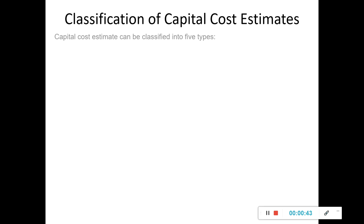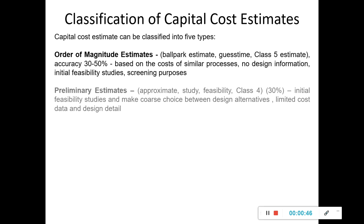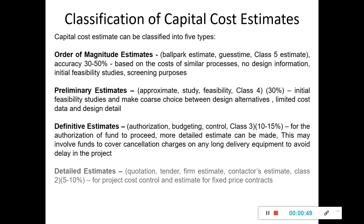So we know that we can classify the capital cost estimate into five types. In this course we will only cover the order of magnitude estimates, also called ballpark estimates. This is a classified estimate and the accuracy is only 30 to 50 percent, because this order of magnitude estimate is based on the cost of similar processes using historic data. We don't have enough information, and this estimate works as an initial feasibility study and for screening purposes only.